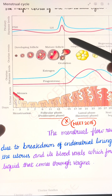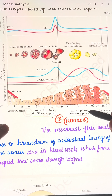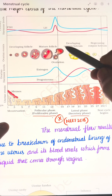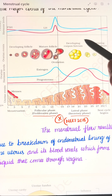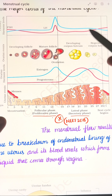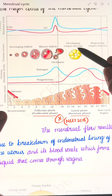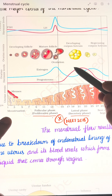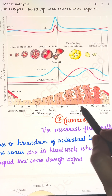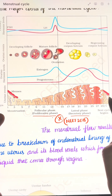The ovulatory phase is followed by the luteal phase, or secretory phase. In this phase, the remaining part of the Graafian follicle transforms into the corpus luteum, and the corpus luteum secretes large amounts of progesterone for the maintenance of the endometrium.